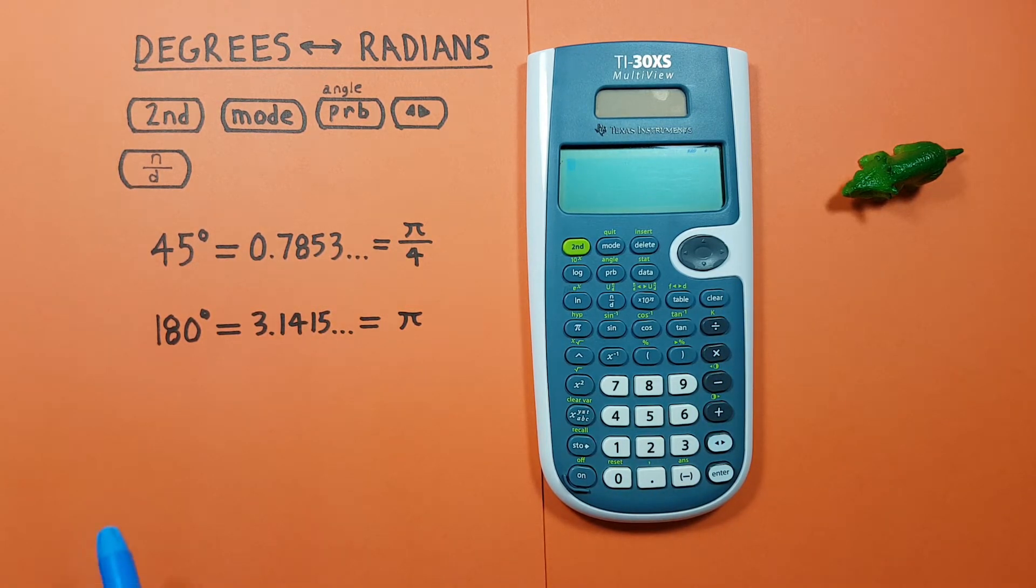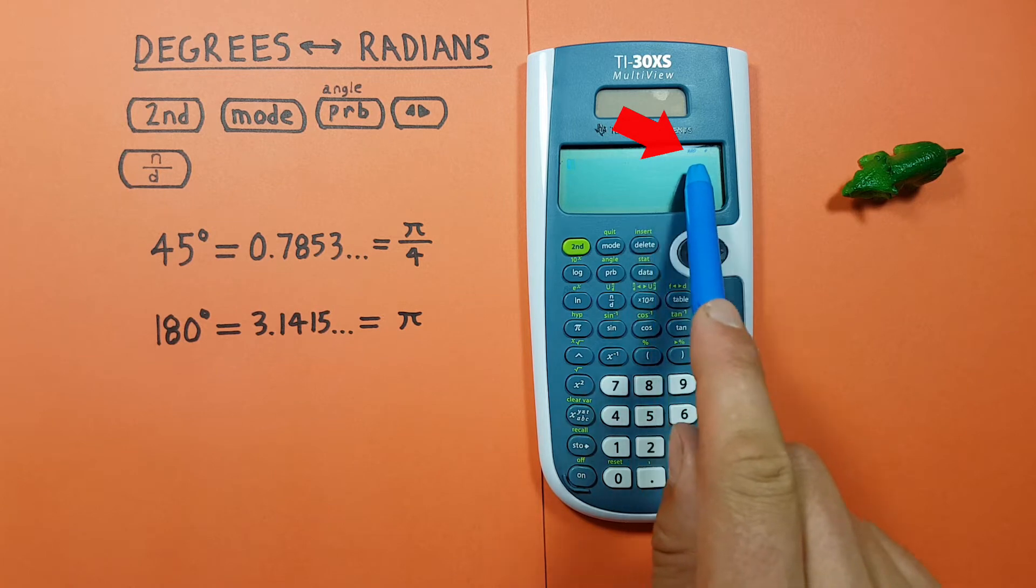Another example, let's say we are given 180 degrees and want to convert that to radians. We're already in radians mode, so that's good.